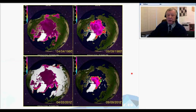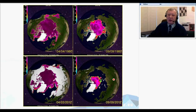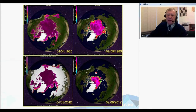Now you know why we have much more rain in the north of Scandinavia and sometimes in the middle latitudes of Europe. Because this bigger open water area has the possibility of evaporating much more compared to the situation in the 1980s.